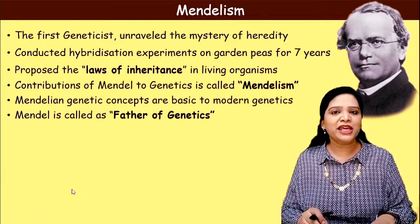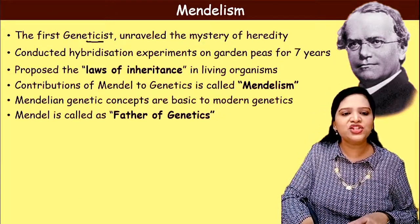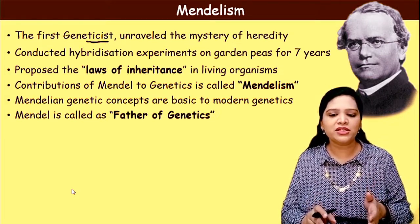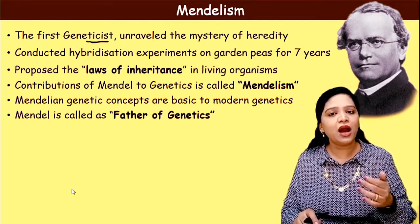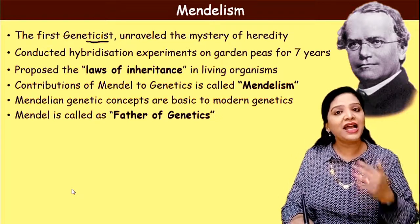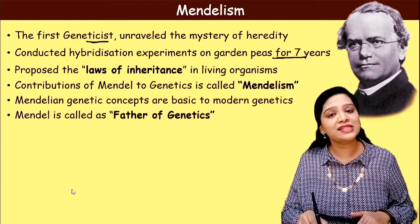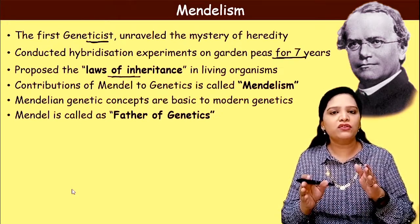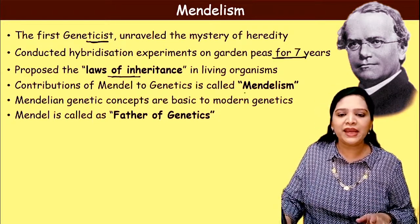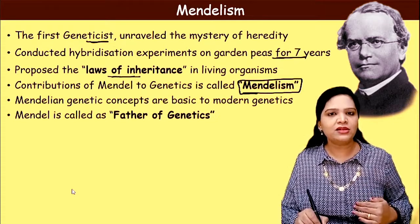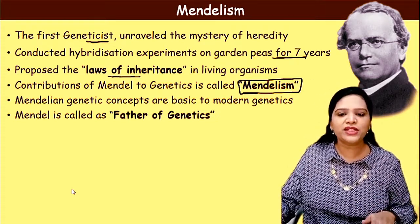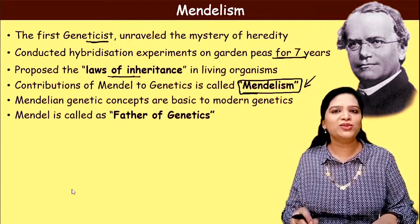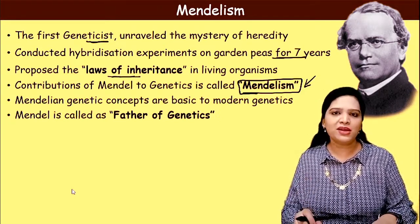Then came Gregor Johan Mendel. He was the first geneticist who unraveled the mystery of heredity. During the mid-19th century, Mendel paved the way for understanding genetics. He conducted hybridization experiments using garden pea plants for almost seven years and proposed the laws of inheritance. The contributions of Gregor Johan Mendel to the field of genetics are called Mendelism — the basic foundation of what we now call modern genetics. That's why we call him the father of genetics.